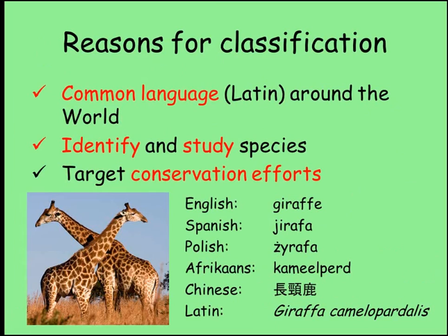The latest figures estimate that there are about 8.7 million species on Earth, so it's an incredibly difficult job to find, name and sort all of them correctly. Despite this, there are several key advantages. The first is to make sure that scientists across the world refer to living things in the same way, so a common language, Latin, is used so that the same species is not referred to by different names in different countries. A further benefit of classification is that it allows scientists to identify, study and conserve species, meaning that conservation efforts can be targeted where they will have the greatest impact.